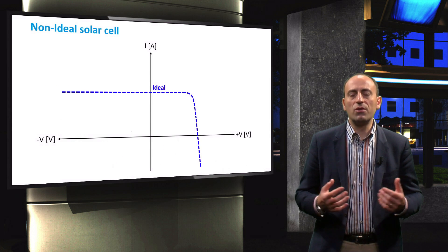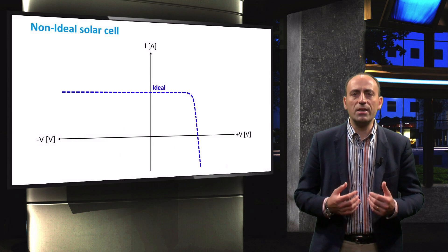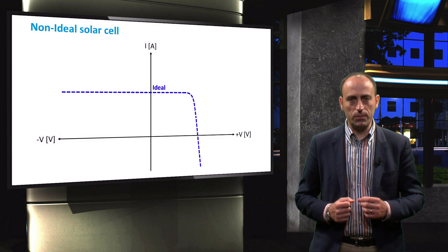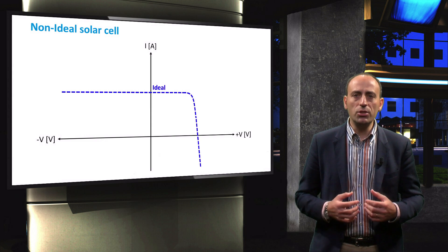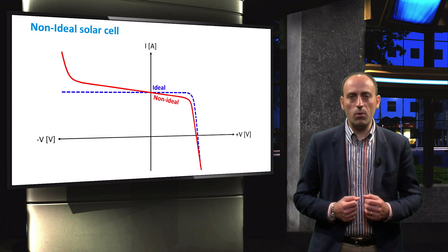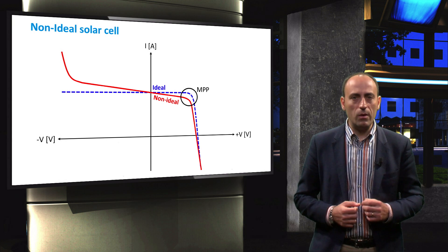We have to account for different loss mechanisms in a solar cell and in so-called cell-to-module losses. These losses change the dashed ideal current-voltage characteristic to the more realistic red one. The loss is visible here at the maximum power point.